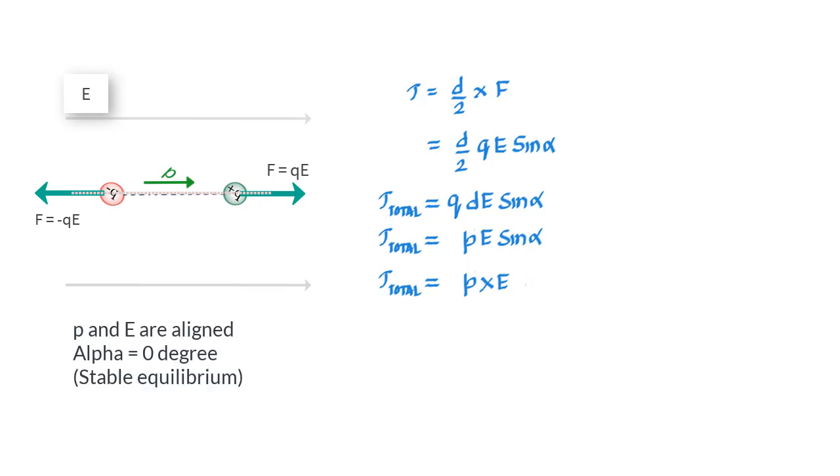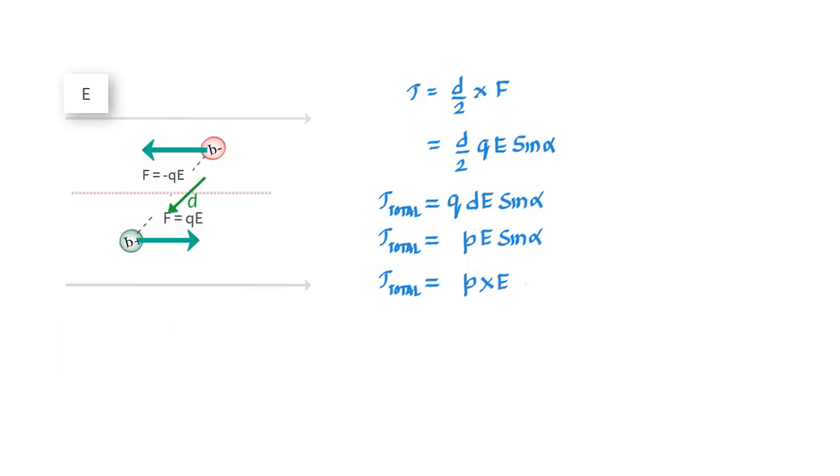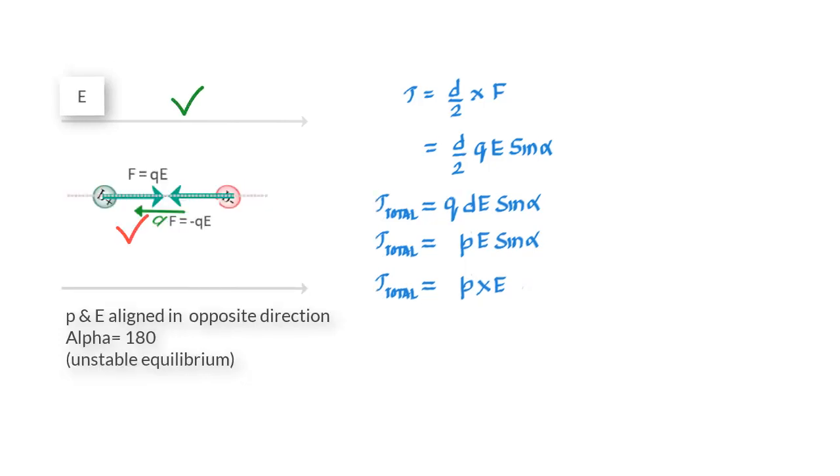But if alpha is 180 degrees or the electric field and dipole moment p are in opposite directions, any movement of the dipole will produce a torque that would reorient the dipole such that p and E align, resulting in the dipole attaining stable equilibrium. So when p and E are at 180 degrees apart, any shift in the dipole would reorient it such that it no longer remains in the original orientation. When the dipole is in such an orientation or alpha is 180 degrees, we say it is in a state of unstable equilibrium.